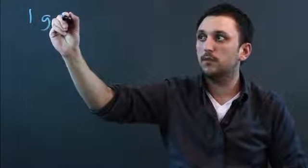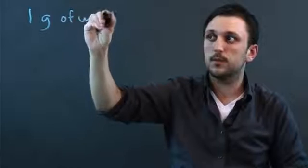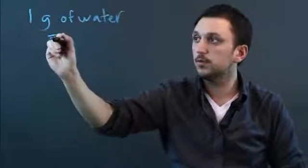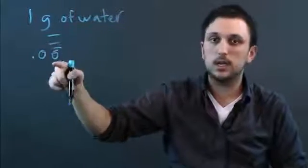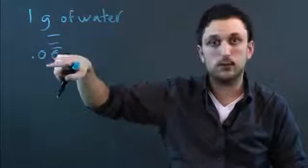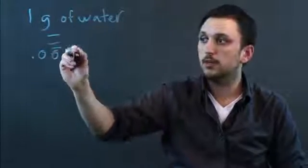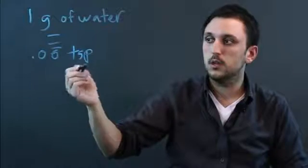However, you can if you know the mass and you know the volume of a given substance. So for example, water, you can say well one gram of water equals 0.06 repeating, it's a long fraction, so you might as well just say 0.06 repeating teaspoons of water.